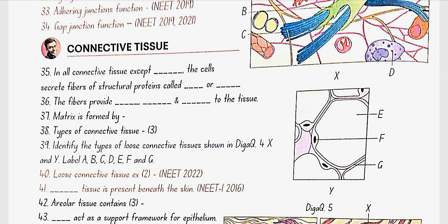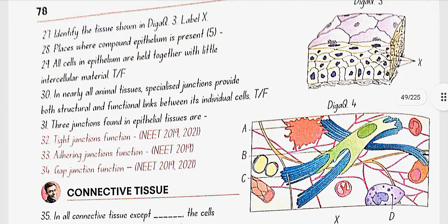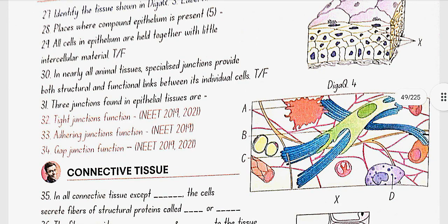Identify the types of loose connective tissue shown in diagram 4, X and Y, and label A, B, C, D, E, F, and G. Here in diagram 4: X is the areolar tissue, A is macrophage, B is fibroblast, C is collagen fibers, D is mast cell, Y is adipose tissue, E is fat storage area, F is nucleus, and G is the plasma membrane.